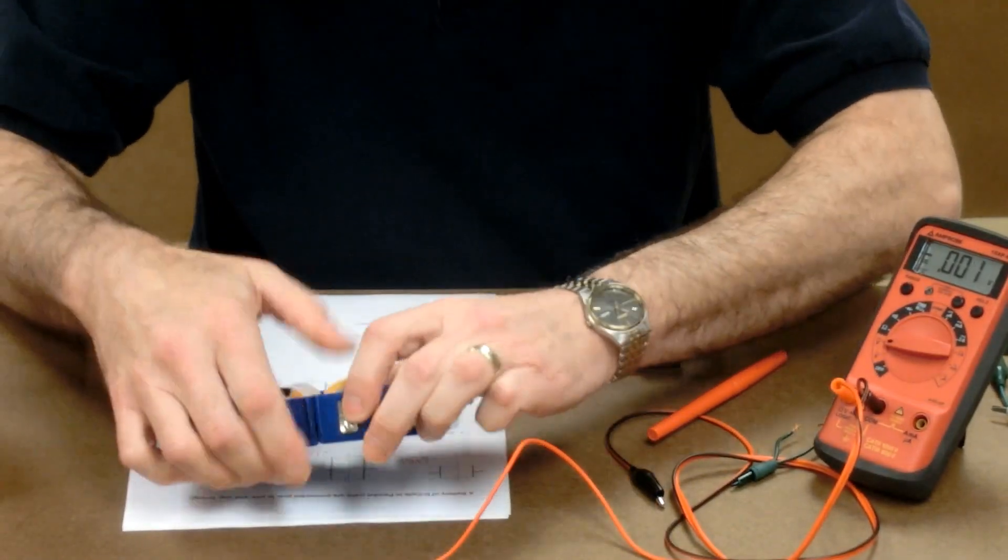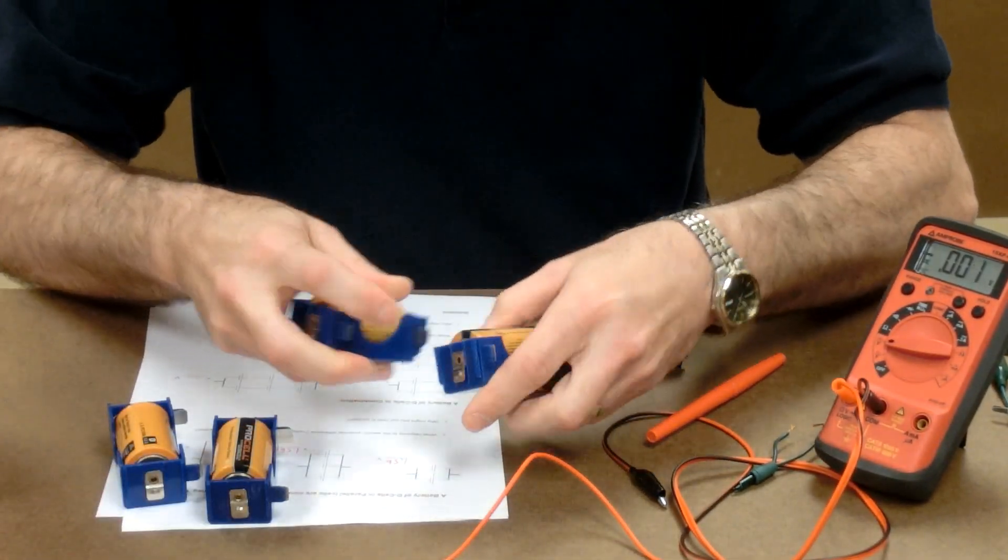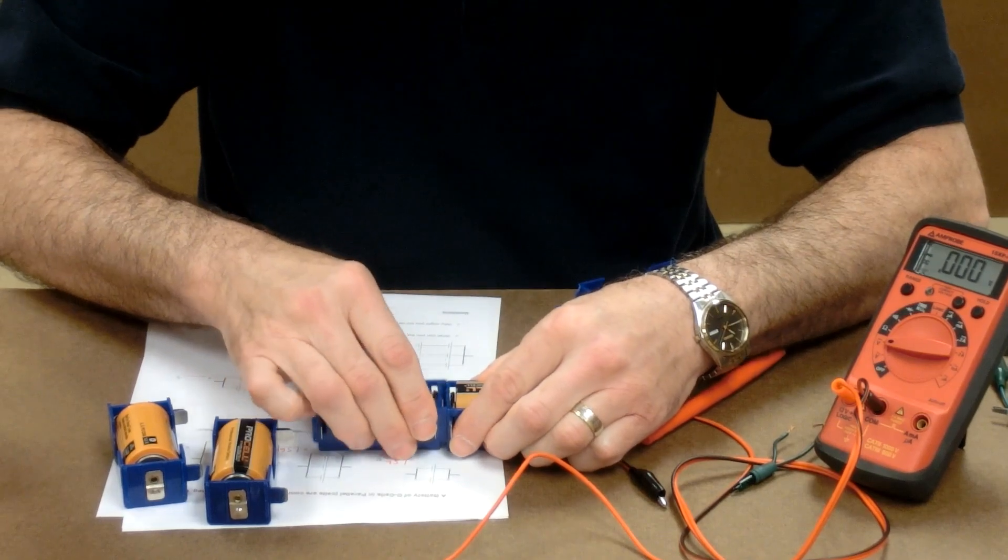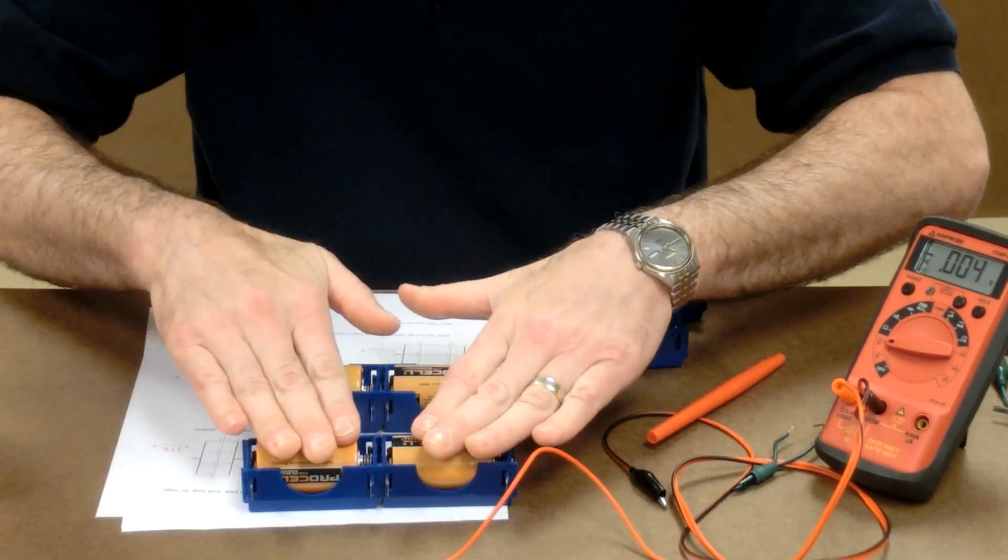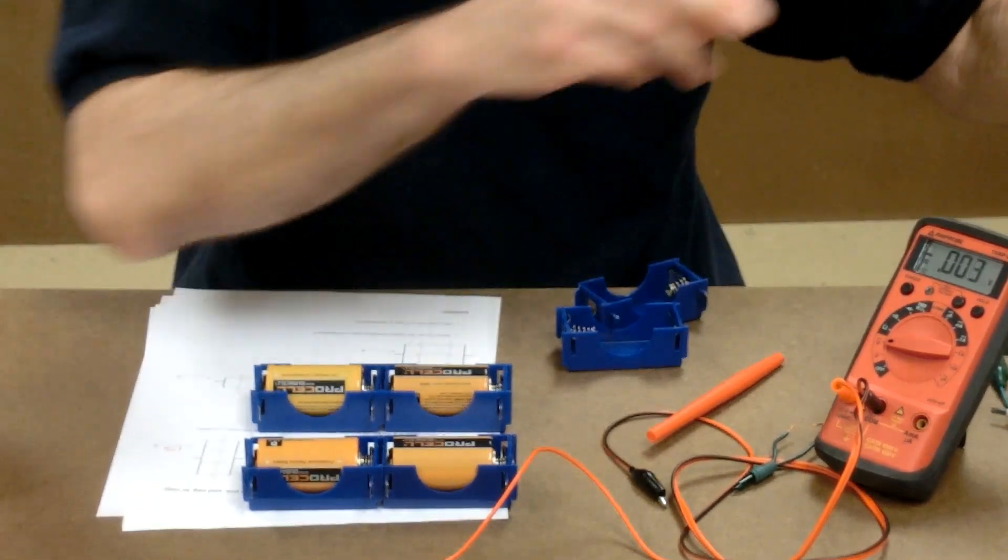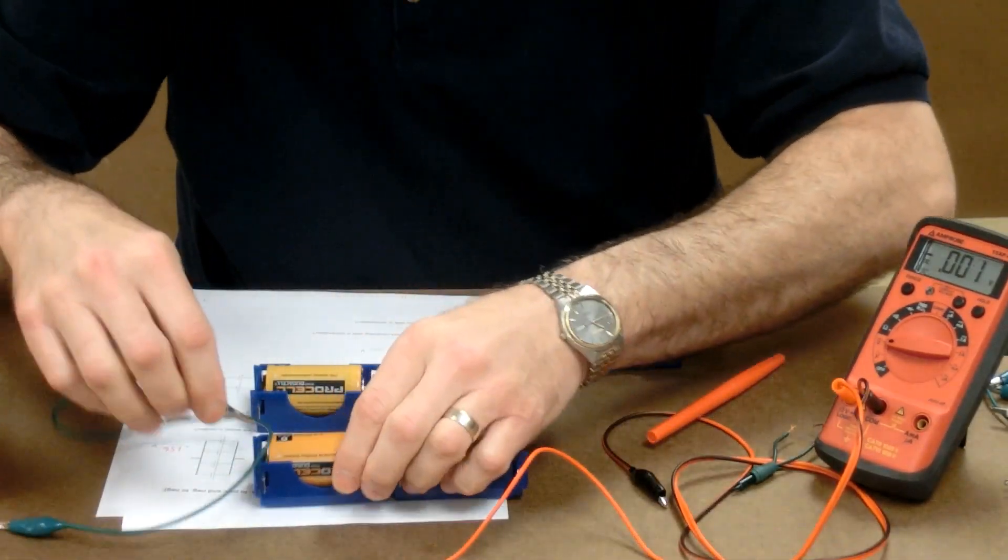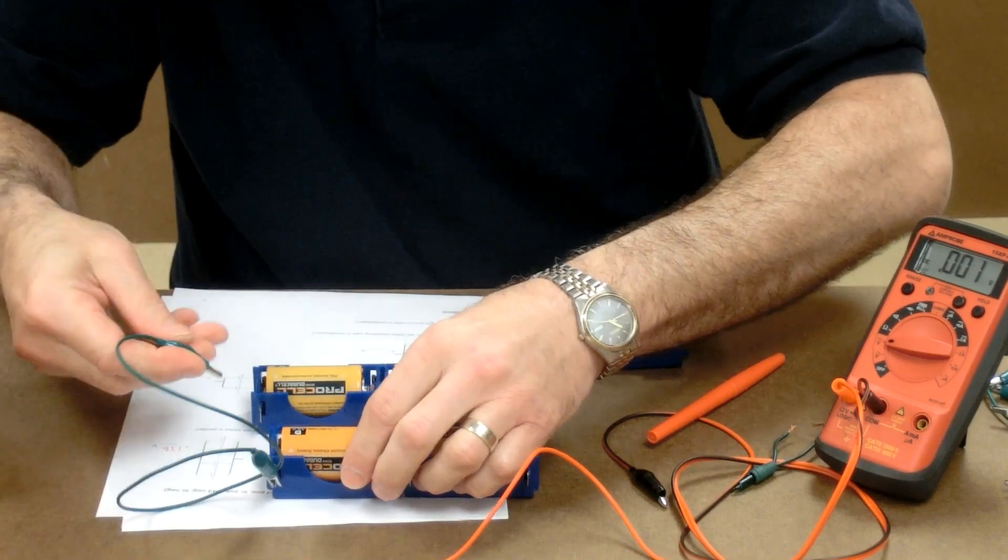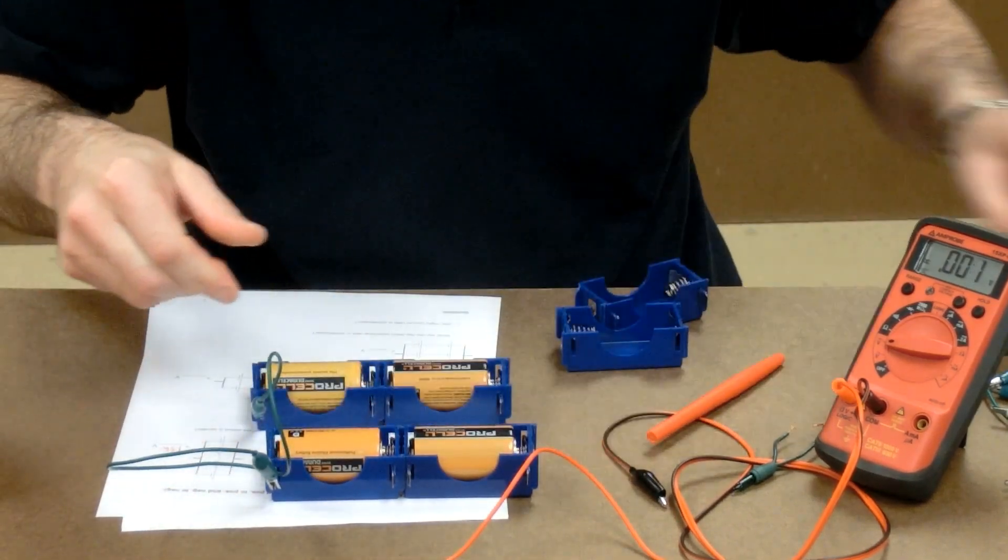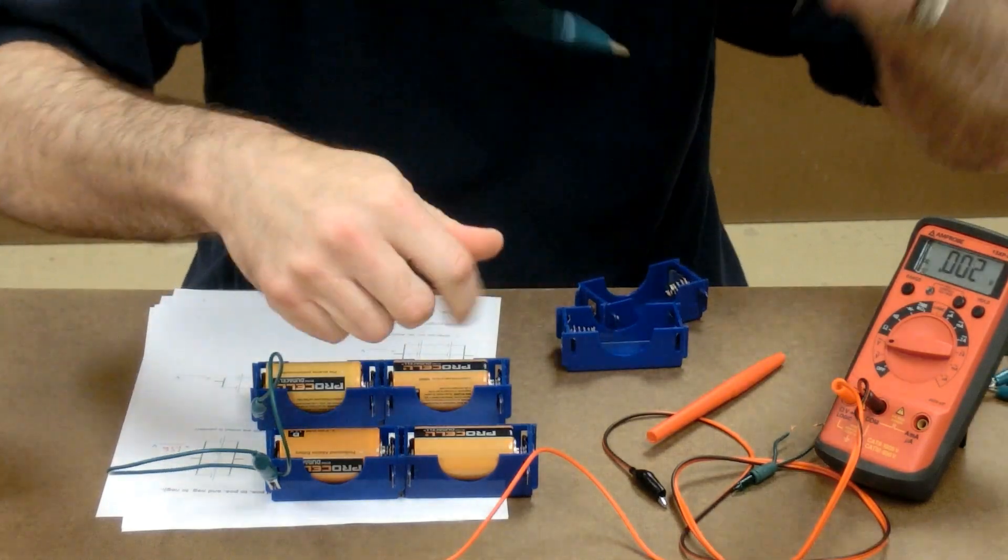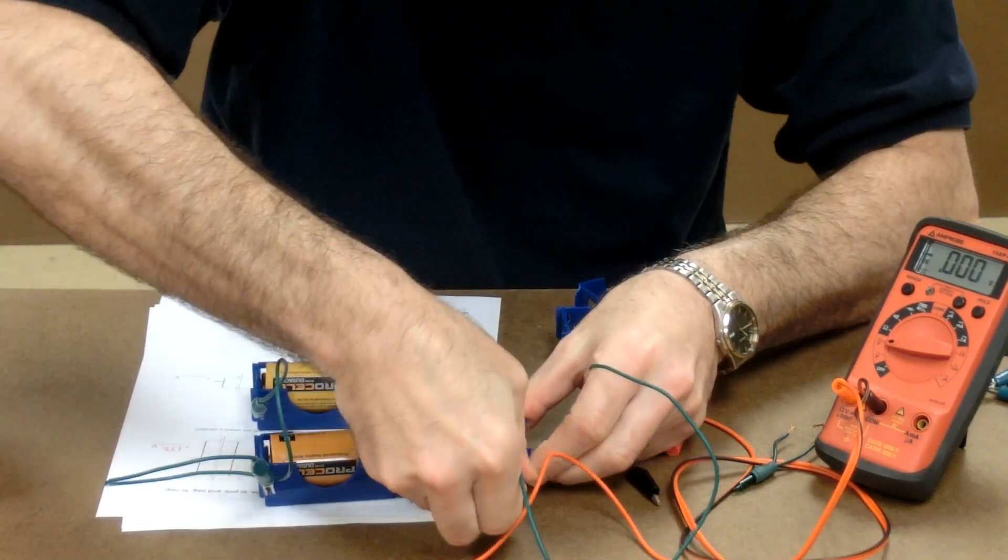Now, we can also put cells in what's called combination when they're series and parallel. Here are two cells in series with two branches. We have to use an alligator clip wire to connect the positive end to the positive end and another alligator clip wire to go negative to negative.